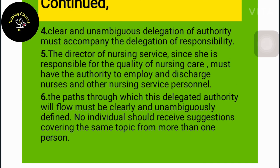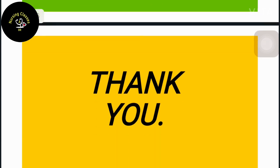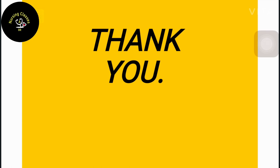The paths through which delegated authority flows must be clearly and unambiguously defined. No individual shall receive instructions covering the same topic from more than one person. Duties and activities must be assigned through the line of authority, and performance at any level is checked by the next higher level. Coordination must be provided through group meetings, conferences, common planning, reports, and instructions. There must be flexibility of the operation system when conditions make it advisable to vary from the usual pattern.